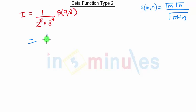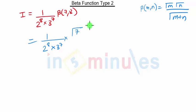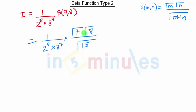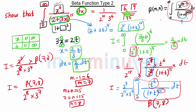This term will remain as 1 upon 2 raise to 8 into 3 raise to 7. Beta of 7 comma 8 is nothing but gamma of 7 into gamma of 8 upon gamma of 15. This can be our final answer, but we have to prove it is nothing but gamma of 6 into gamma of 9 upon gamma of 15.